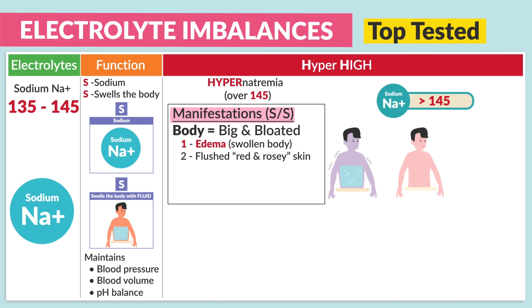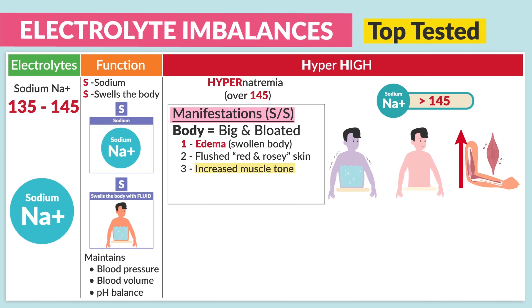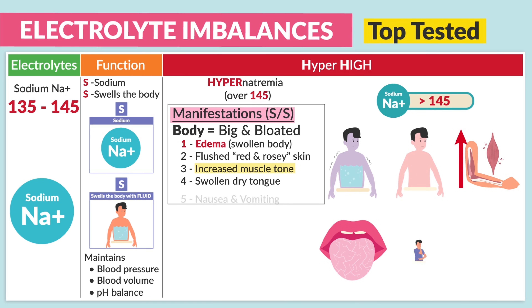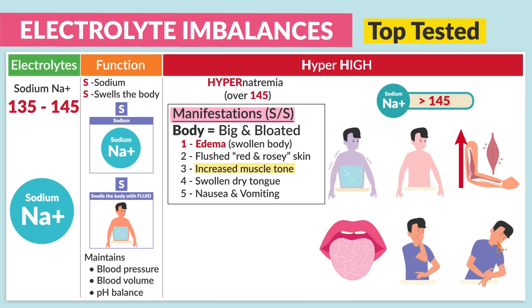Number two: flushed, red, and rosy skin. Number three: an increase in muscle tone — be sure to write that down, increased muscle tone. Number four: a swollen dry tongue. And lastly, number five: nausea and vomiting.